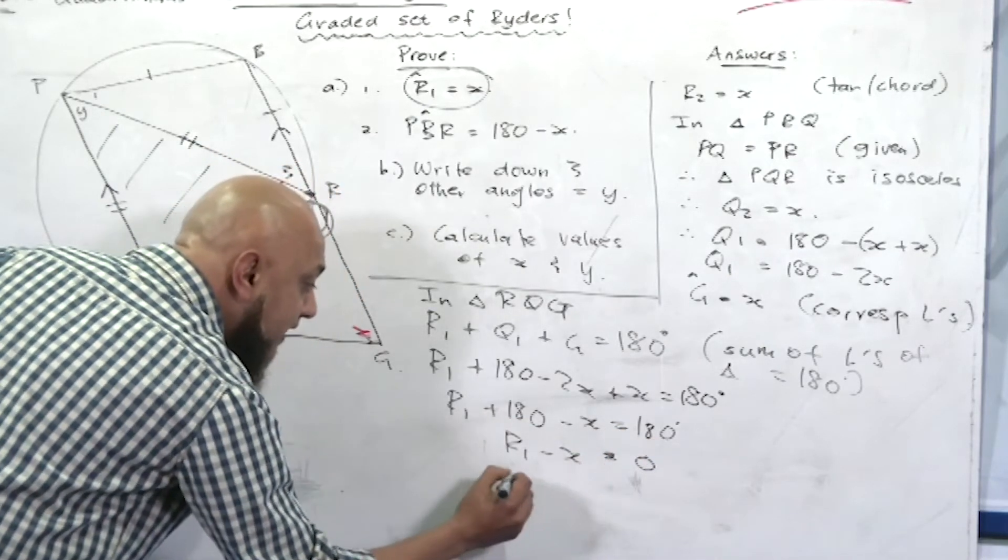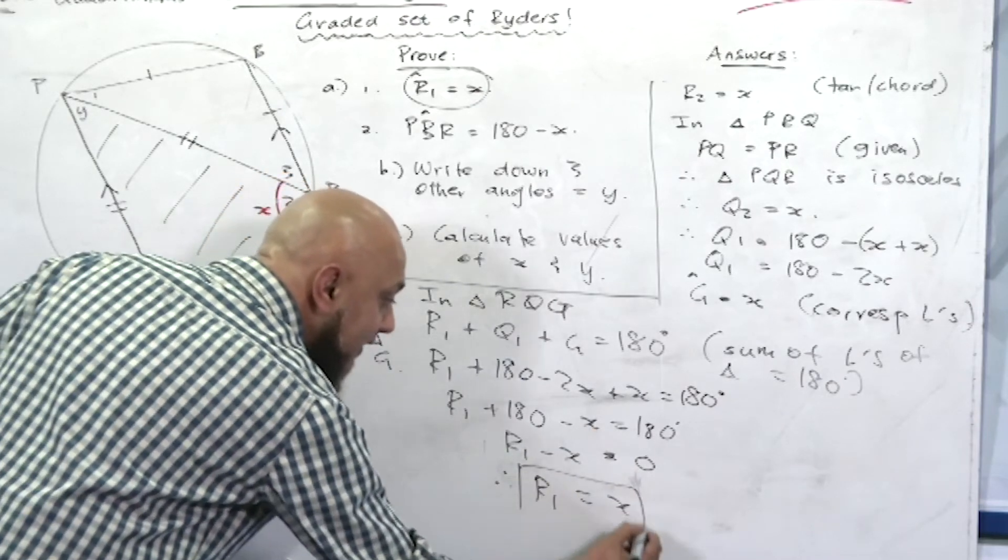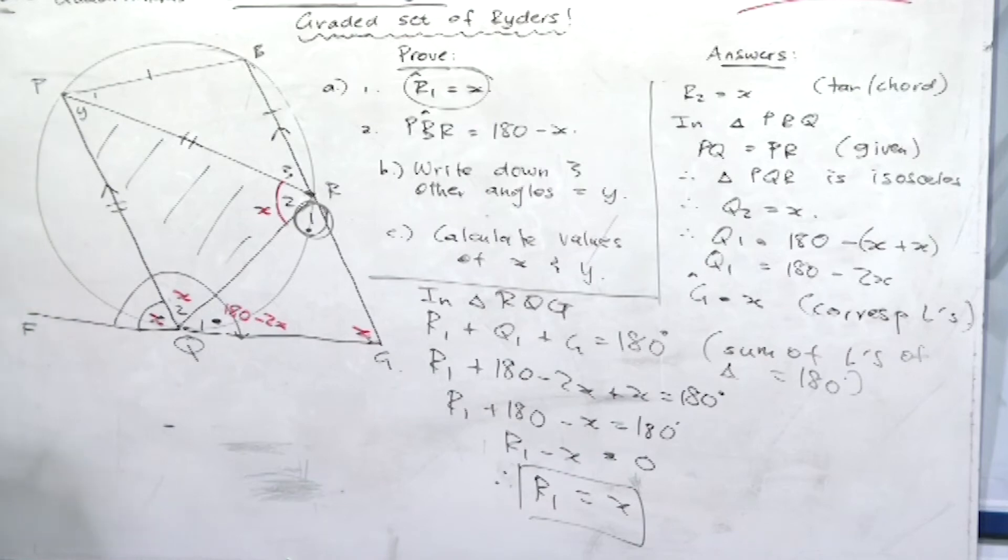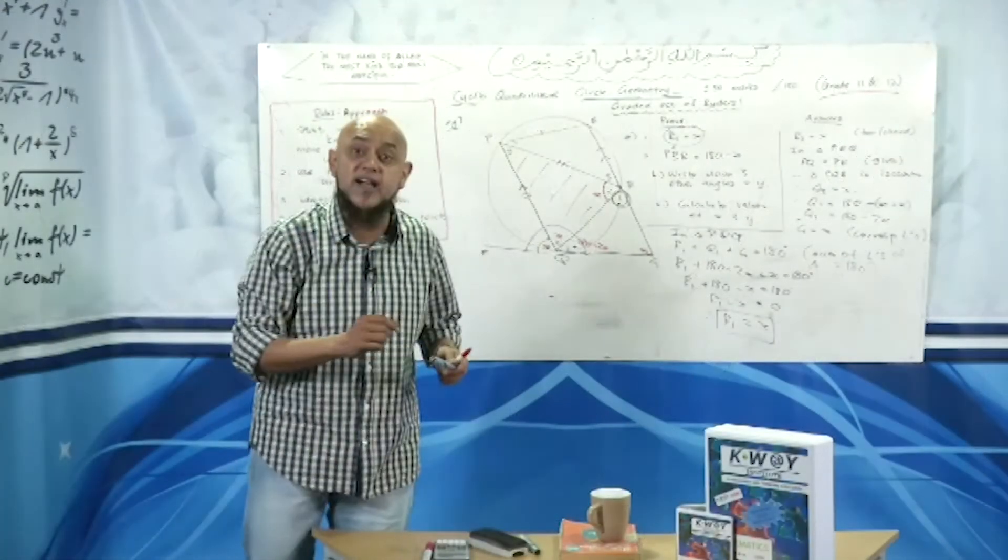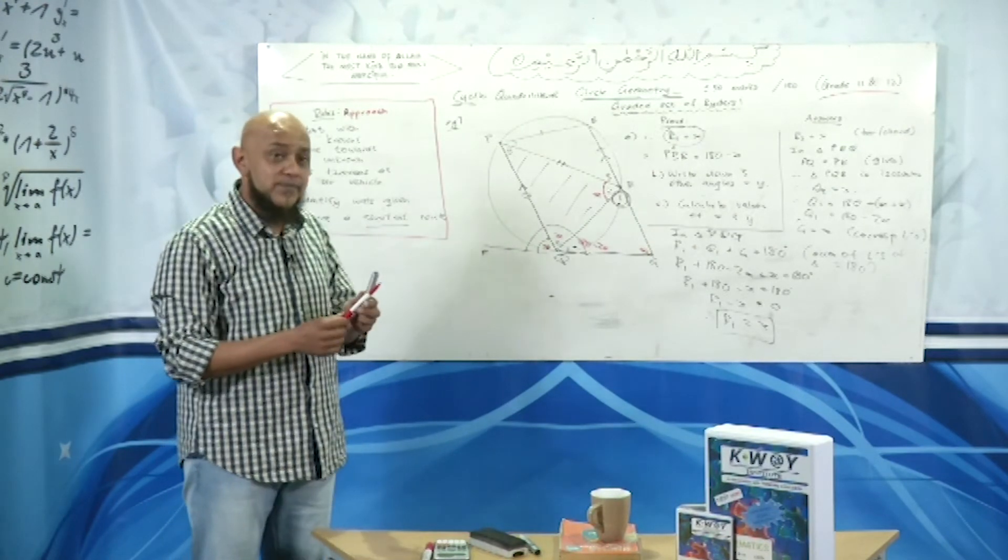Angle r1 minus x is equal to 180 minus 180 is 0. Therefore, angle r1 is equal to x. And there we go, we've proved angle r1 equal to x. Just the first question alone, guys, is worth six marks.